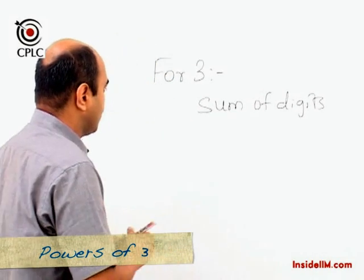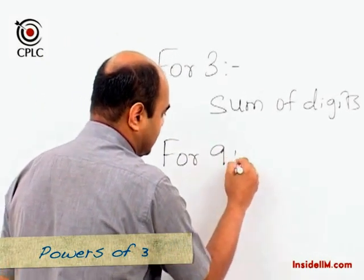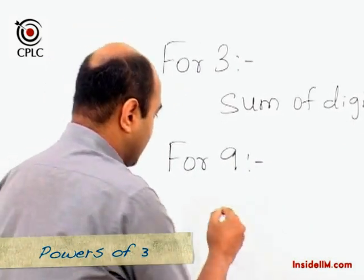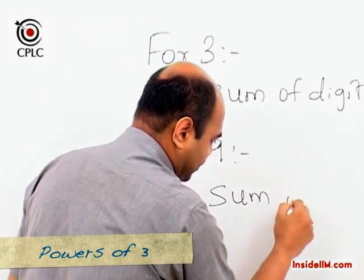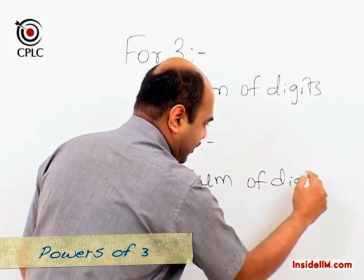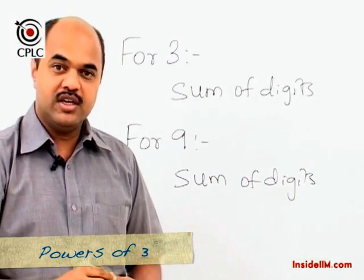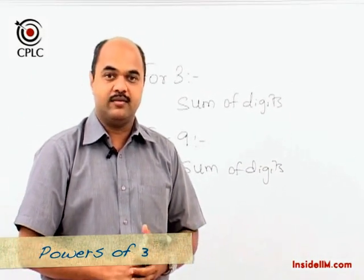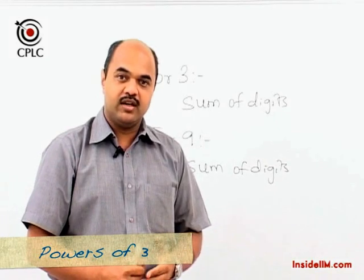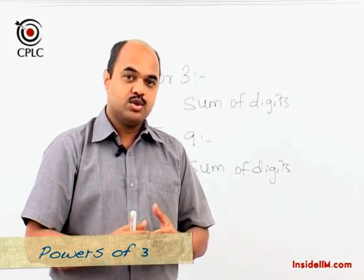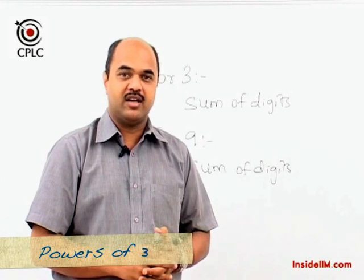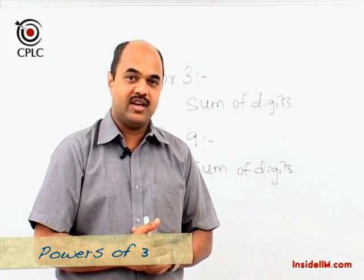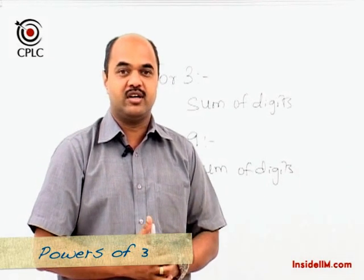Moving on to another power of three — the divisibility test for nine. The rule remains the same: we again check the sum of the digits, and if the sum of the digits is divisible by nine, then the entire number is divisible by nine. The remainder test for nine also remains the same — just divide the sum of the digits by nine and check the remainder; that remainder is the same when the entire number is divided by nine.